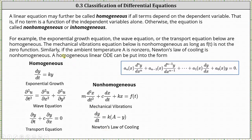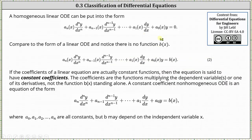Again, a homogeneous linear ODE can always be written in the form shown here in the blue box. If we compare the form of a homogeneous linear ODE to the form of a linear ODE, notice that for the homogeneous linear ODE there is no function b of x. If the coefficients of a linear equation are actually constant functions, then the equation is said to have constant coefficients. The coefficients are the functions multiplying the dependent variable or one of its derivatives, not the function b of x standing alone.